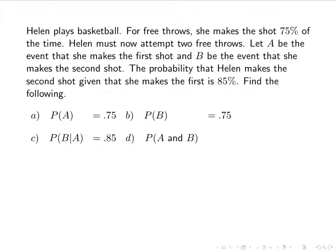Now let's find the probability of A and B. From the multiplication rule, this is the probability of A times the probability of B given A. We plug in 0.75 times 0.85, which gives 0.6375. So the probability that she makes both shots is 0.6375.